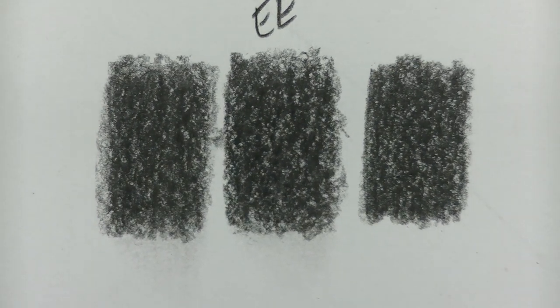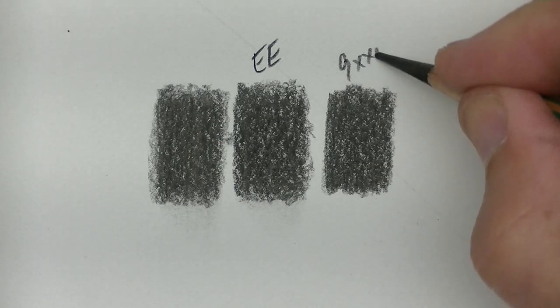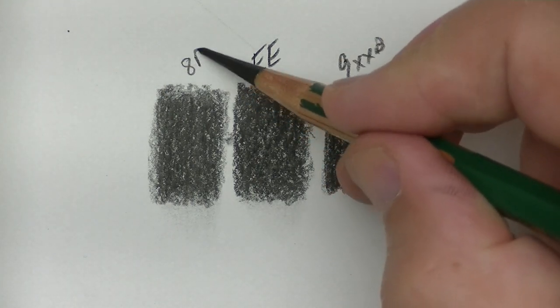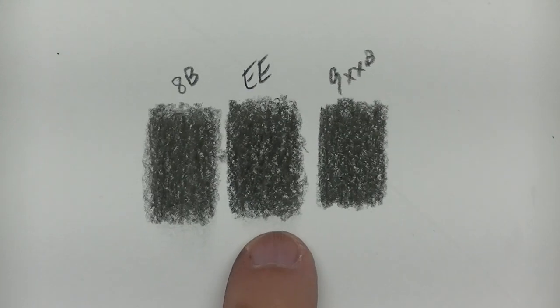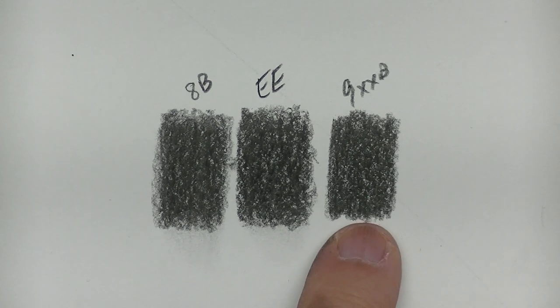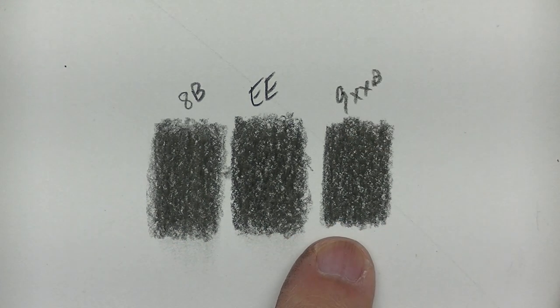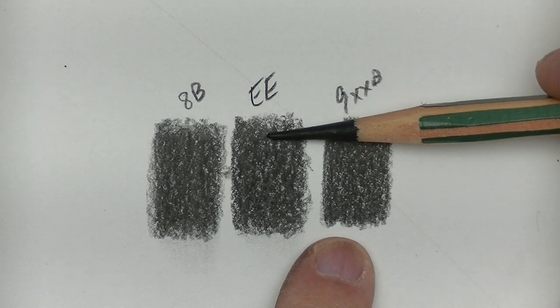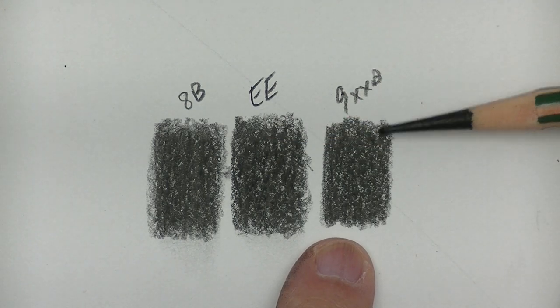Now you can see all three of them right there. This is the 9XXB and this was the 8B. The EE pencil is darker than the 9. The 9 is darker than the 8, and they're all just a shade darker. So this EE, in my opinion, is not replaced by an 8B or a 9XXB. It stands on its own as probably the darkest hybrid pencil that I have personally ever seen because I have nothing else here in all the thousands of pencils I have that is of a higher grade hybrid.